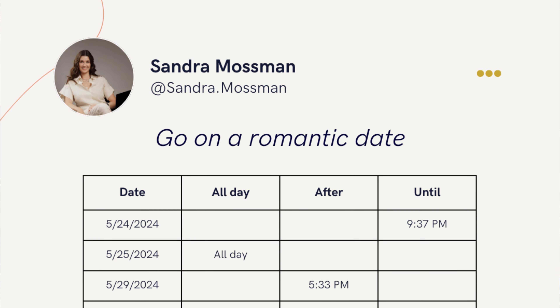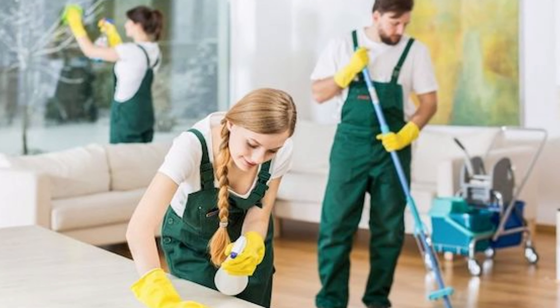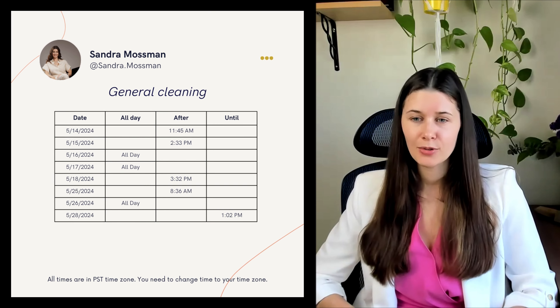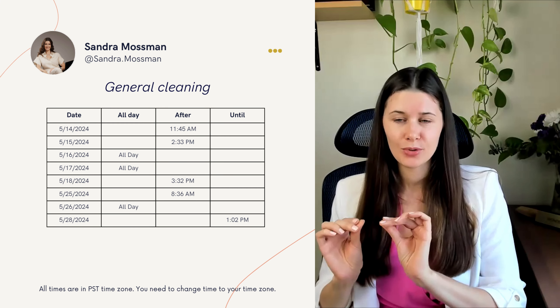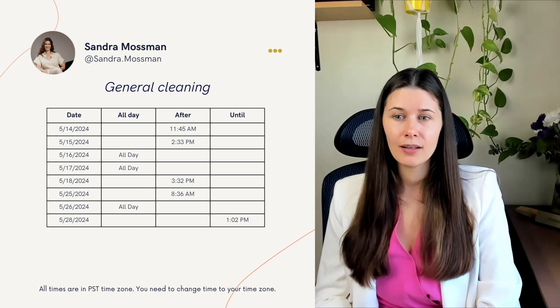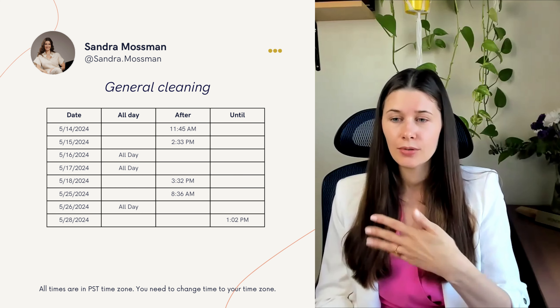For romantic dates — if you have a choice when to go on a date, or if you're married and want to schedule date nights once or twice a month — May 25th all day is a great option. For general cleaning and decluttering, the moon calendar shows signs when your cleaning will be very thorough and detailed. Good days are May 16, May 17 all day, and May 26 all day.